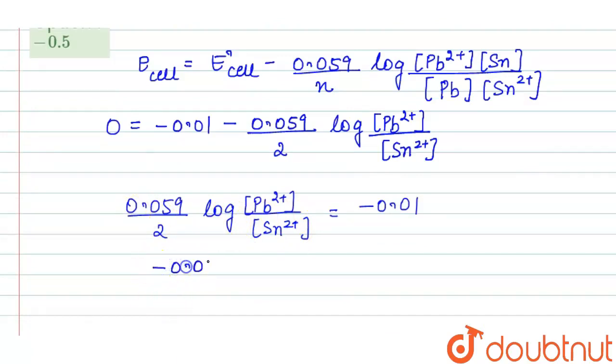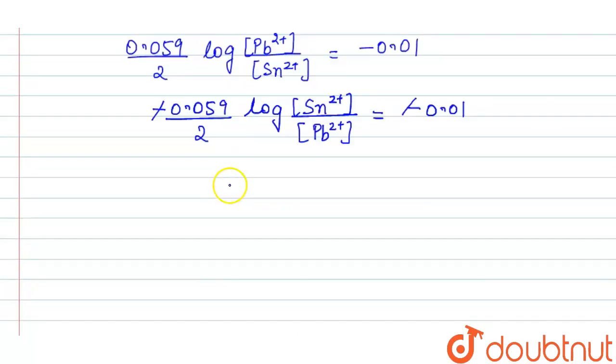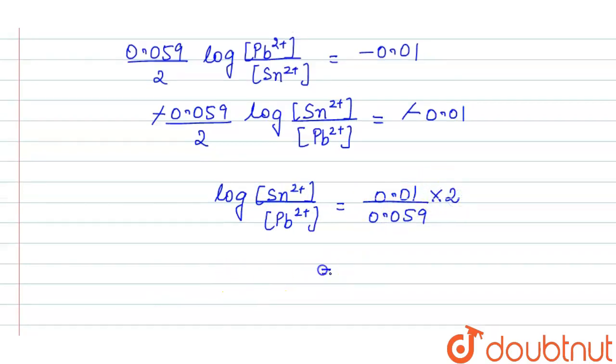From here, inverting the log ratio, we get: log([Sn2+]/[Pb2+]) = 0.01 divided by 0.059 into 2, which equals 0.338.